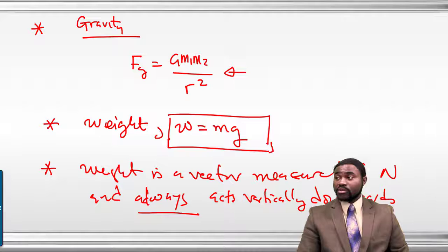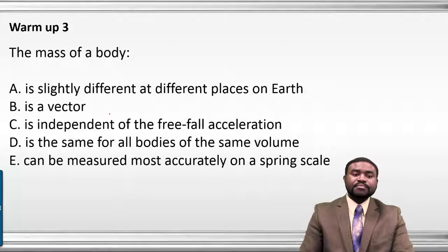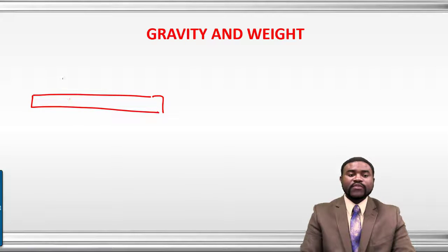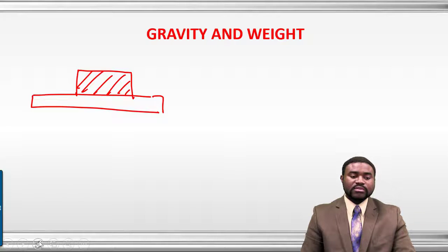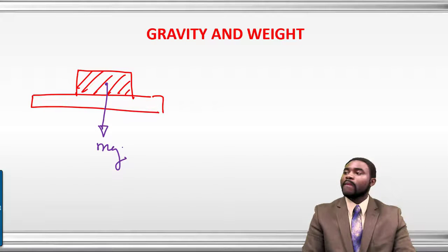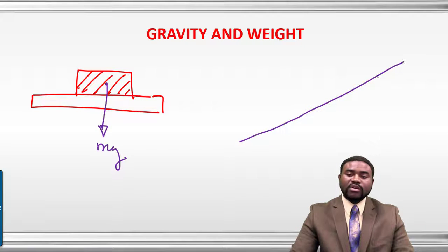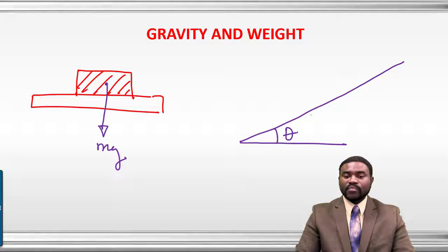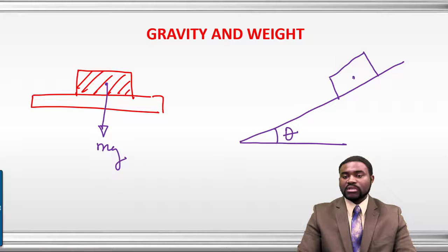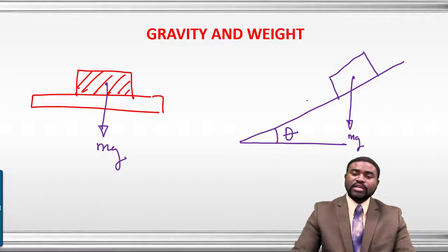For example, if we have a mass lying on a surface, the weight of that object, which acts at the center of gravity, will be vertically downwards — mg. On the other hand, if we have an object lying on an inclined plane, the weight of the object will still act vertically downwards.